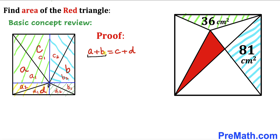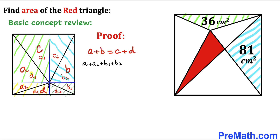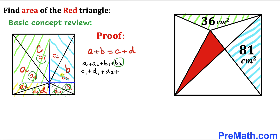Now let's focus on the left-hand side. Area a equals a sub 1 plus a sub 2, and area b equals b sub 1 plus b sub 2. We can see that a sub 1 equals c sub 1, so we replace a sub 1 with c sub 1. Similarly, a sub 2 is replaced by d sub 1, b sub 1 is replaced by d sub 2, and b sub 2 is replaced by c sub 2.